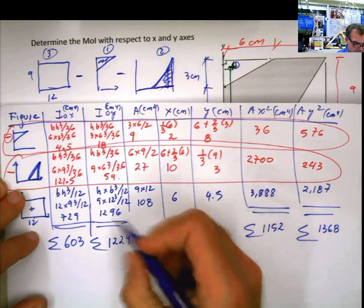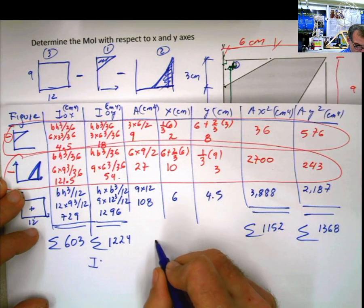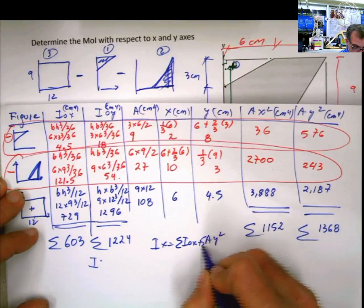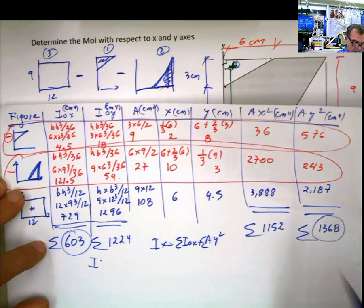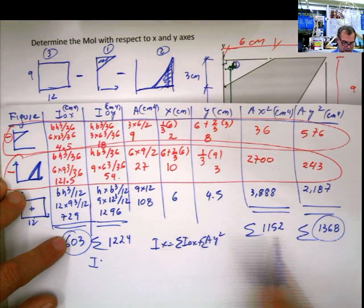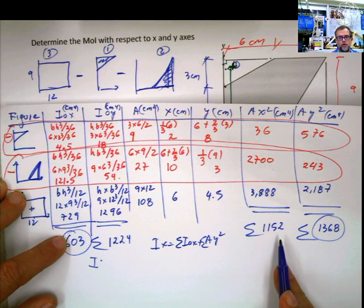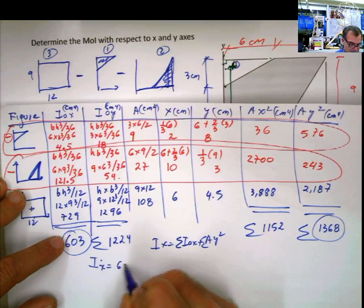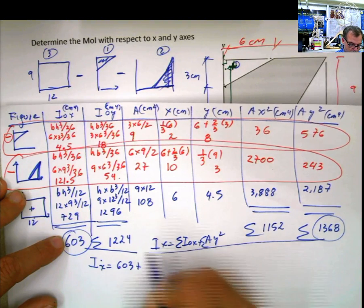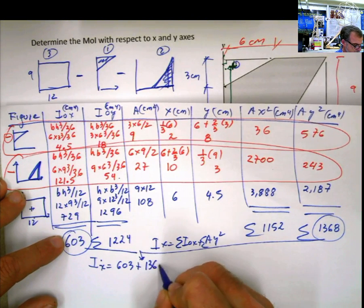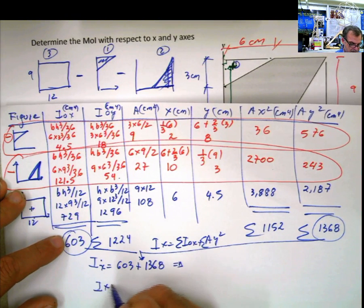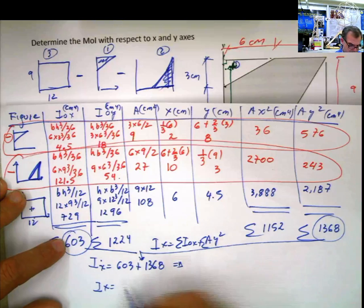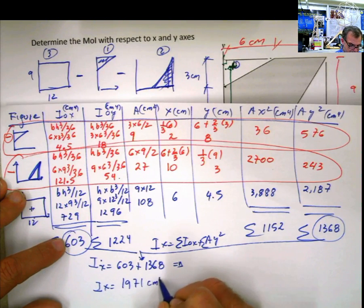Applying Steiner again. i sub x is going to be summation of i sub 0x plus a y squared summation. So that means that it's going to be this plus this. You know what is sad here, guys? Once you finish the table, you get this and add this. And I have seen that happening a lot. So don't do that. i sub x is going to be equal 603 plus 1368. And that implies that i sub x is going to be equal to 1971 centimeters to the 4th.